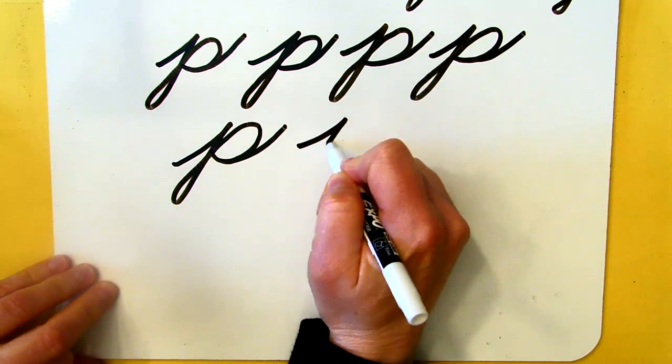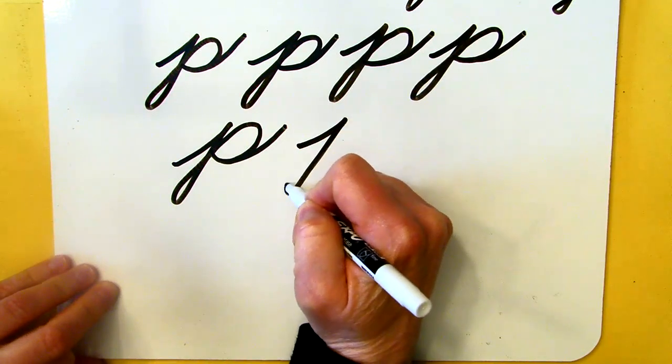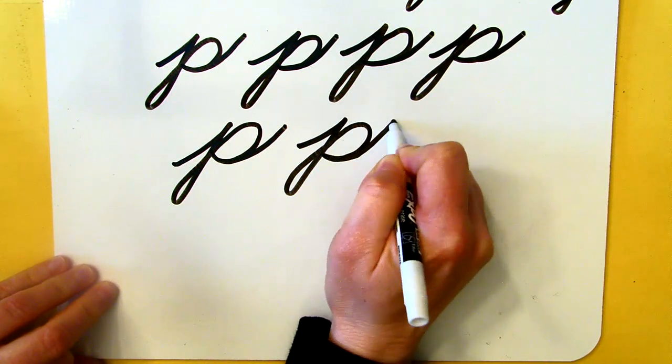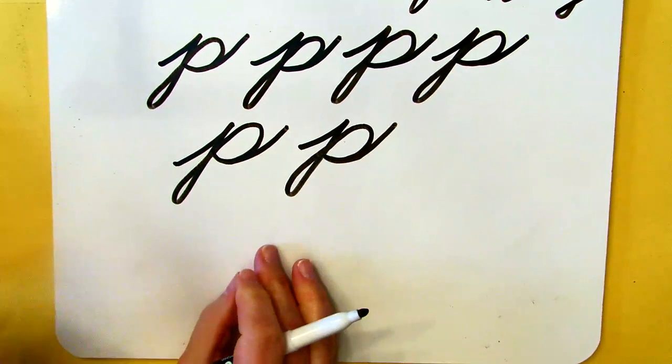Undercurve, pull back to the basement, loop back, and then go up and over curve, undercurve. That is your lowercase P.